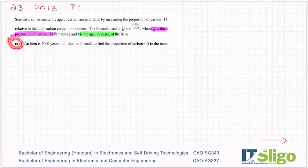So part A, an item is 2000 years old. If I match the years to the years, then I know that means that T, which is the age in years, is 2000 years old. Use the formula to find the proportion of carbon-14 in the item.